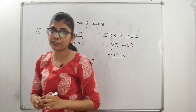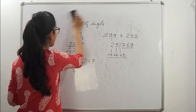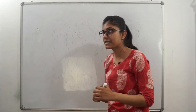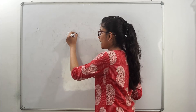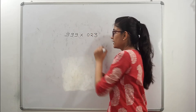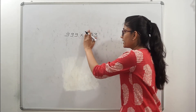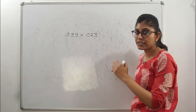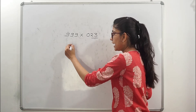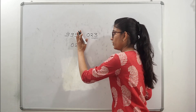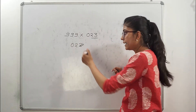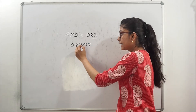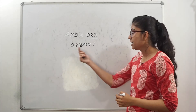Now let's see the second part — where the number of 9s is more than the number of digits. For example, 9999 × 23. Since 9999 has more 9s than 23 has digits, we add a leading zero to make it 023. Then we do minus 1, giving 0, 2, 2. Then for the last digits, we add numbers that sum to 9 for each digit: 7, and again based on the number of 9s.